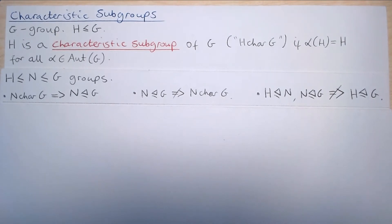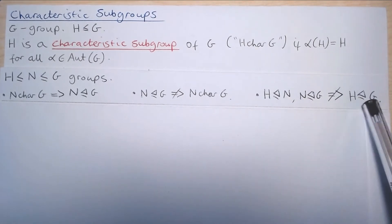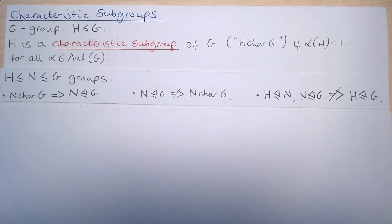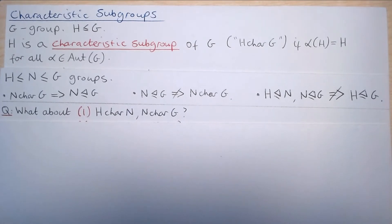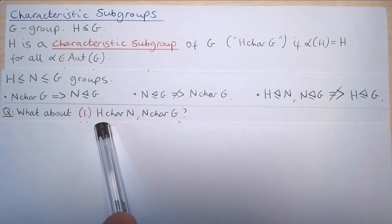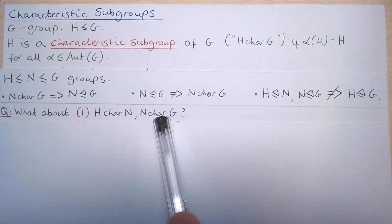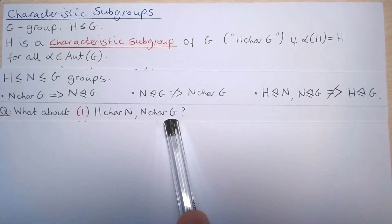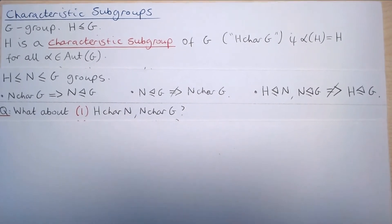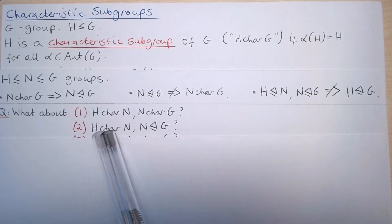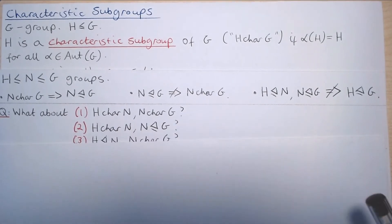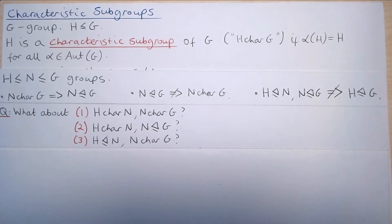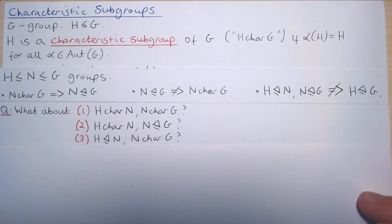The natural question to then ask is: does this result change if we replace normal with characteristic? In other words, if H is characteristic in N and N is characteristic in G, does this mean that H is characteristic in G? Maybe that doesn't hold and H is just normal in G? What if H is characteristic in N and N is normal in G? Or H is normal in N and N is characteristic in G? In this video we will attempt to answer these questions.